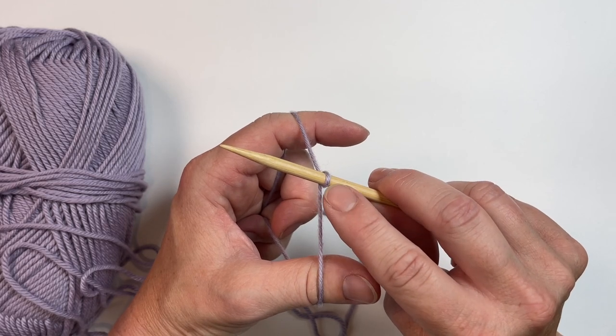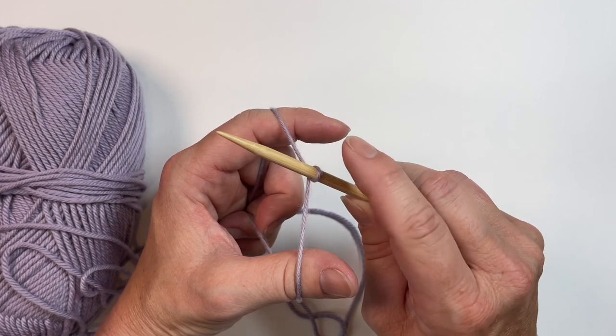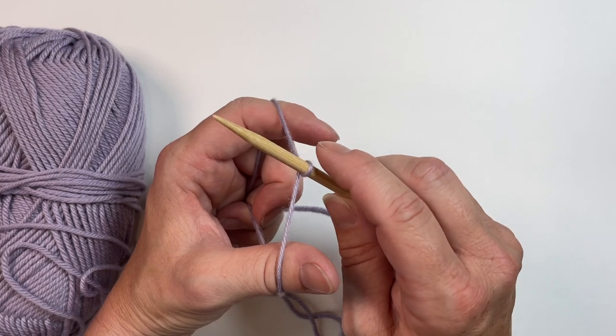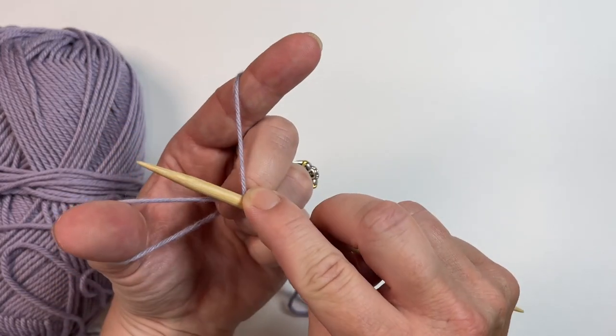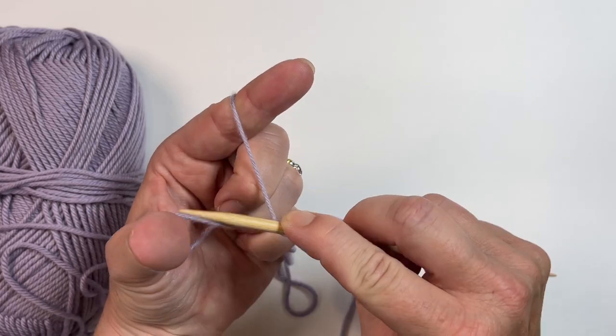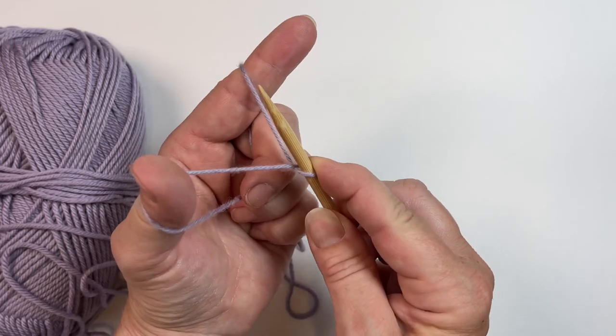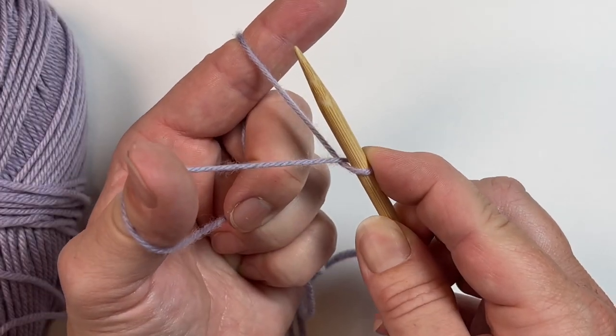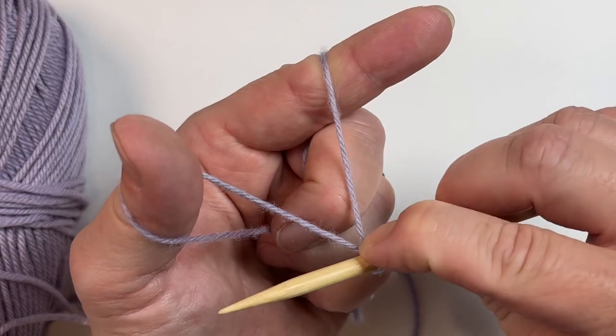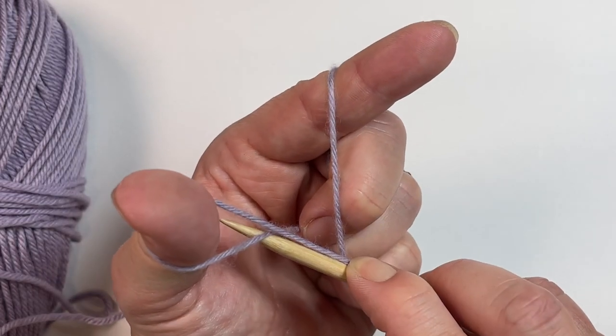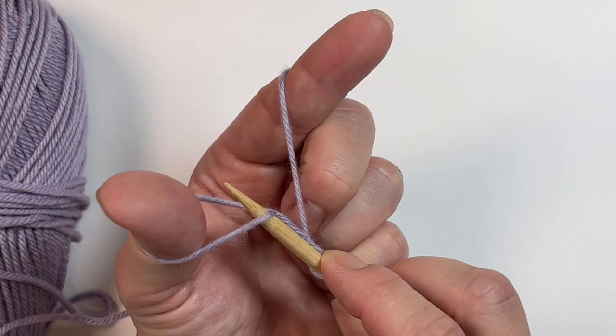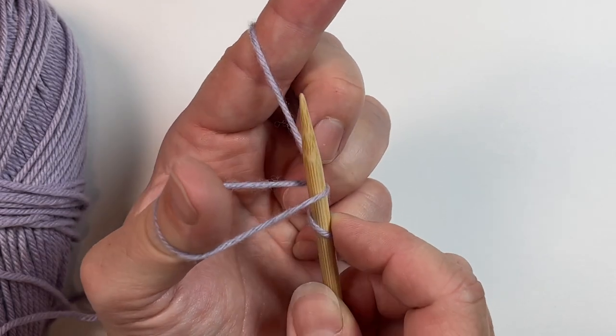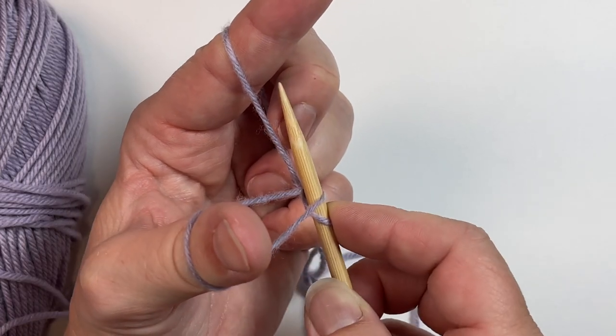Now let's get started on this cast on. I'm hanging on to it. I'm going to pull this down a bit so I have a V between my tail and my working yarn. I'm going to bring my point of my needle toward me, down and underneath that strand and back up through the loop that my thumb makes. Then I'm going to come to the right with the tip of the needle and gather up the working yarn around my index finger.